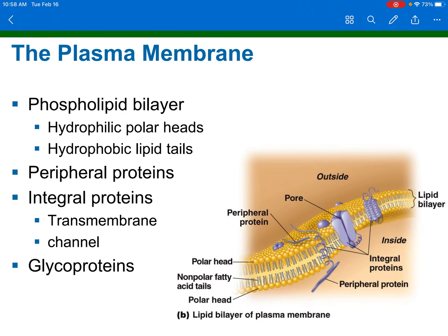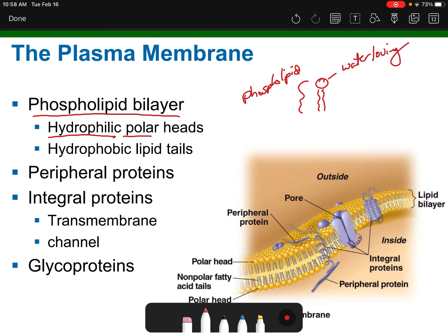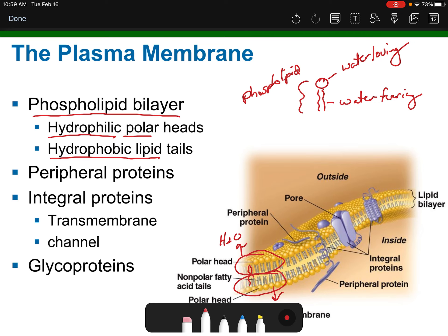The plasma membrane is a phospholipid bilayer — two layers of phospholipids. The heads are hydrophilic and polar, meaning water-loving, while the tails are hydrophobic, made up of lipids, meaning water-fearing. There's a double layer where the heads face out of and into the cell because that's where water is found, and the tails face each other because they do not want to be near water.